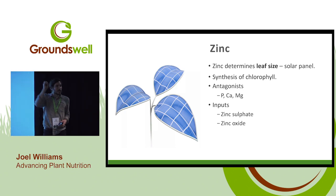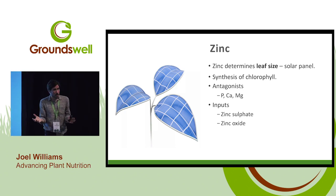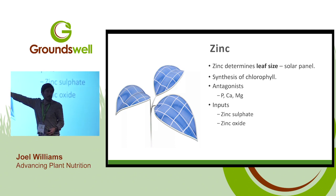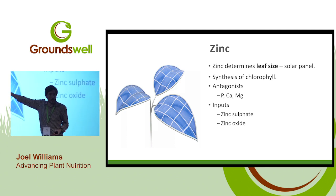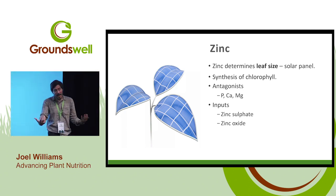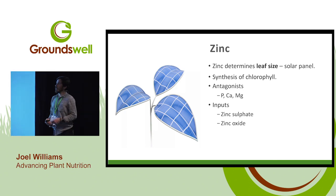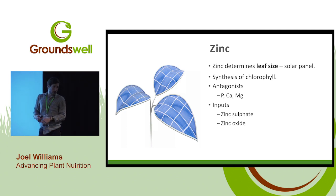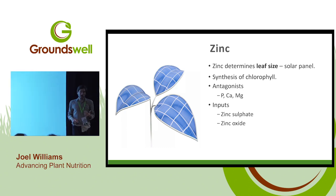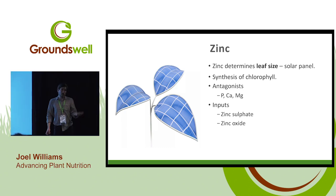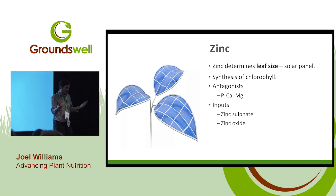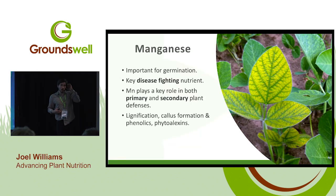Zinc plays a role in determining leaf size — this is the solar panel of the plant. The leaf size determines what surface area we can capture sunlight, and the bigger the solar panel, the more energy we have to drive photosynthesis. Zinc also plays a role in the synthesis of chlorophyll, a bit like iron. Antagonists to zinc are high phosphorus, calcium, and magnesium — all three of these can shut down the utilisation of zinc. Zinc sulphate is the recommended option — the sulphate form is typically better, more available, and more easily absorbed and utilised by the plant.